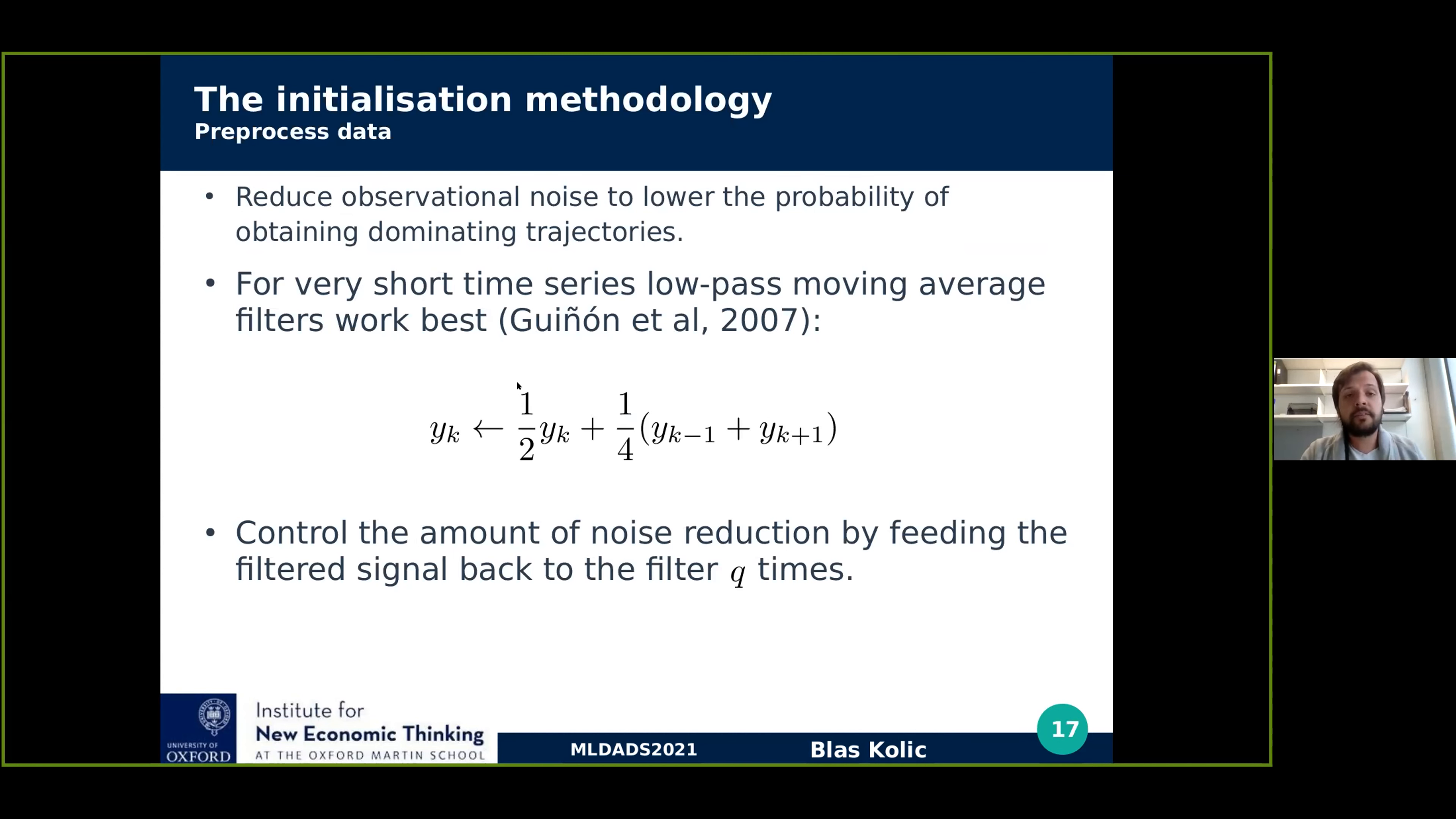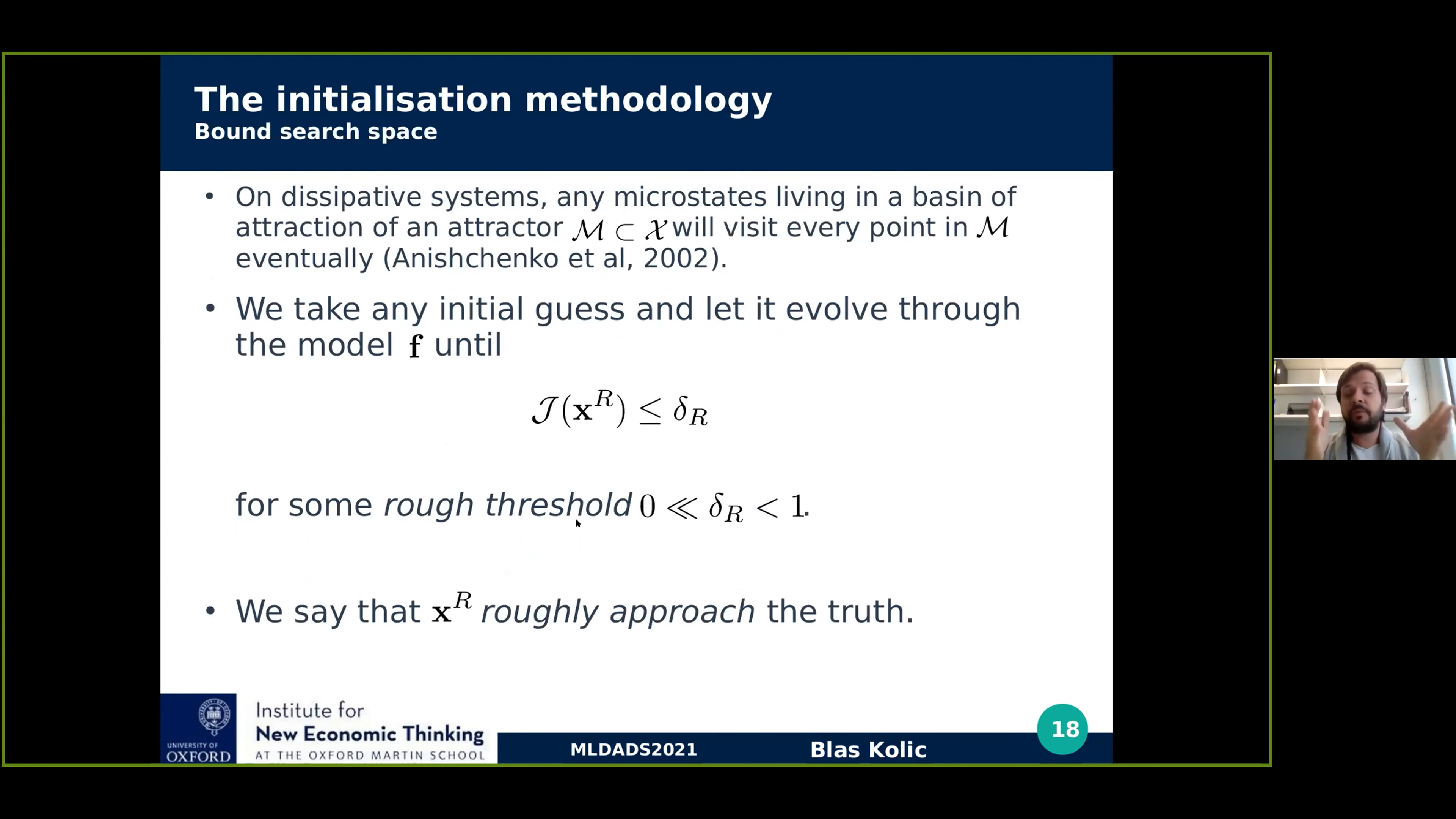Just to give more detail, the pre-processing data part is just to reduce observational noise and lower the probability of observing dominating trajectories, or to make these dominating trajectories closer to the ground truth. For very short time series, we find that low-pass moving average filters are the best. We use filters of this form, which we can feed back into the signal by a fixed number of times to control the amount of noise reduction. We find that for our purposes, this is the best, rather than other techniques.